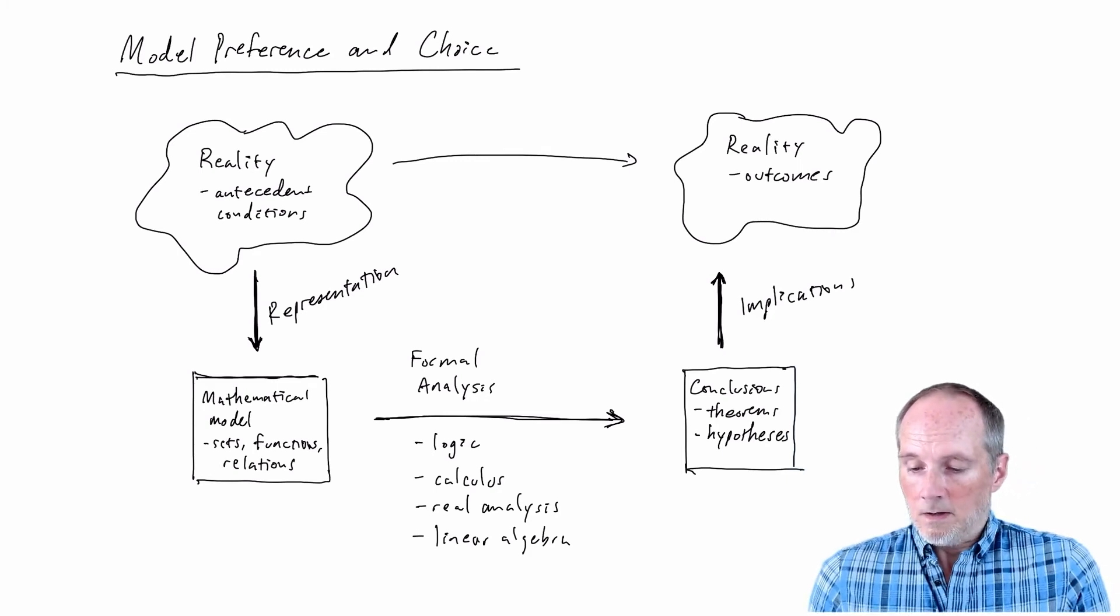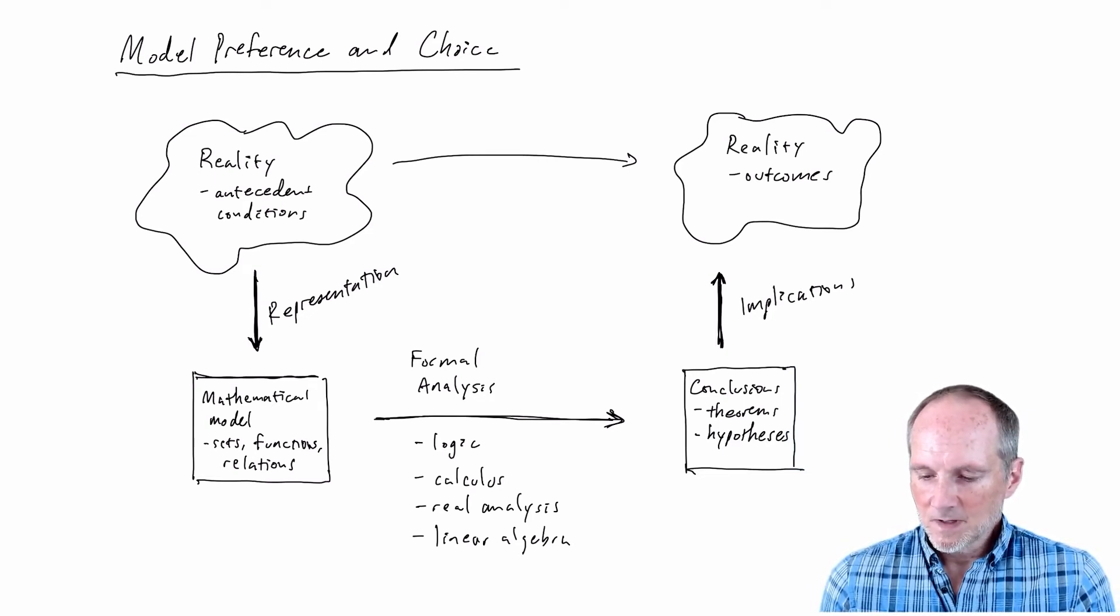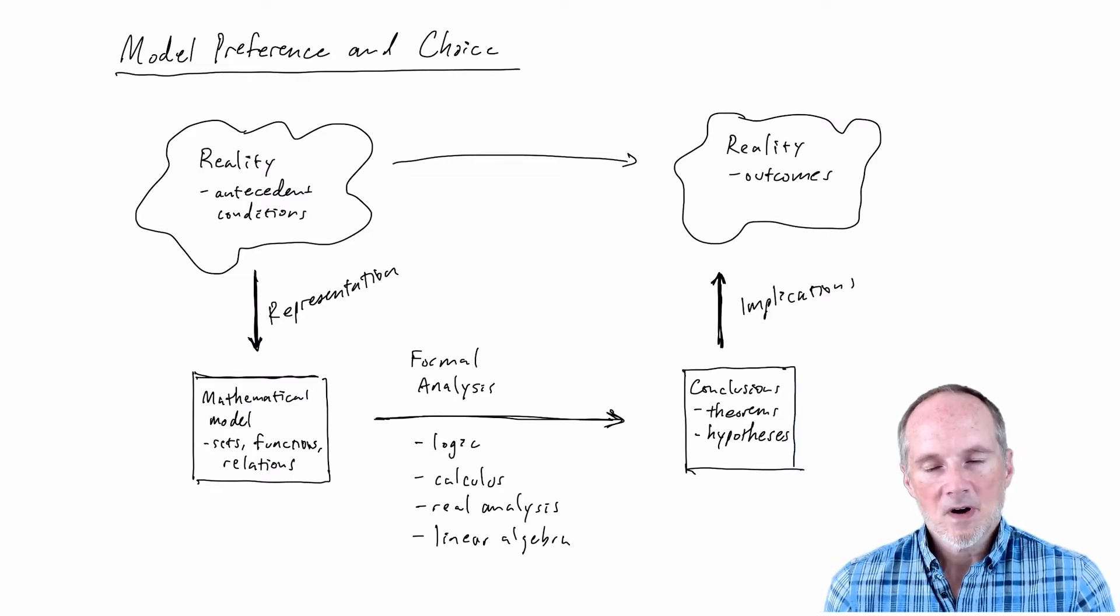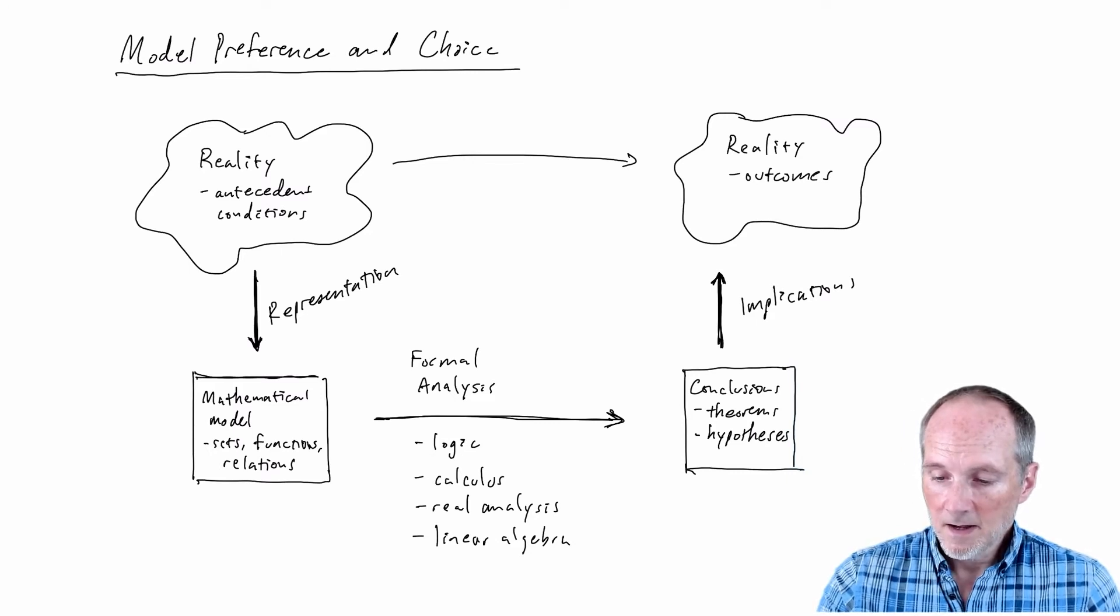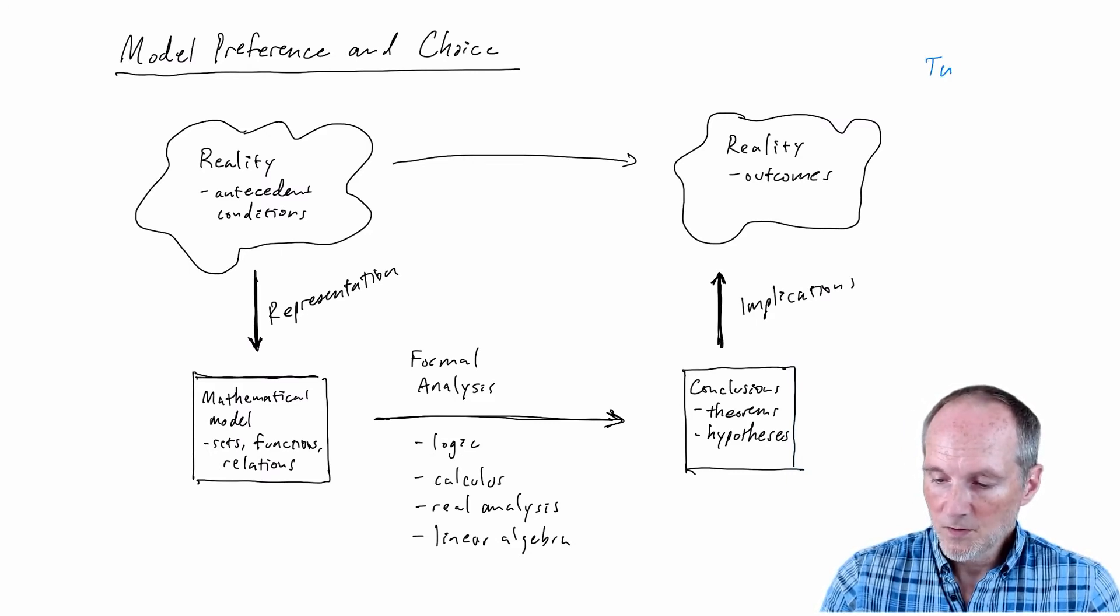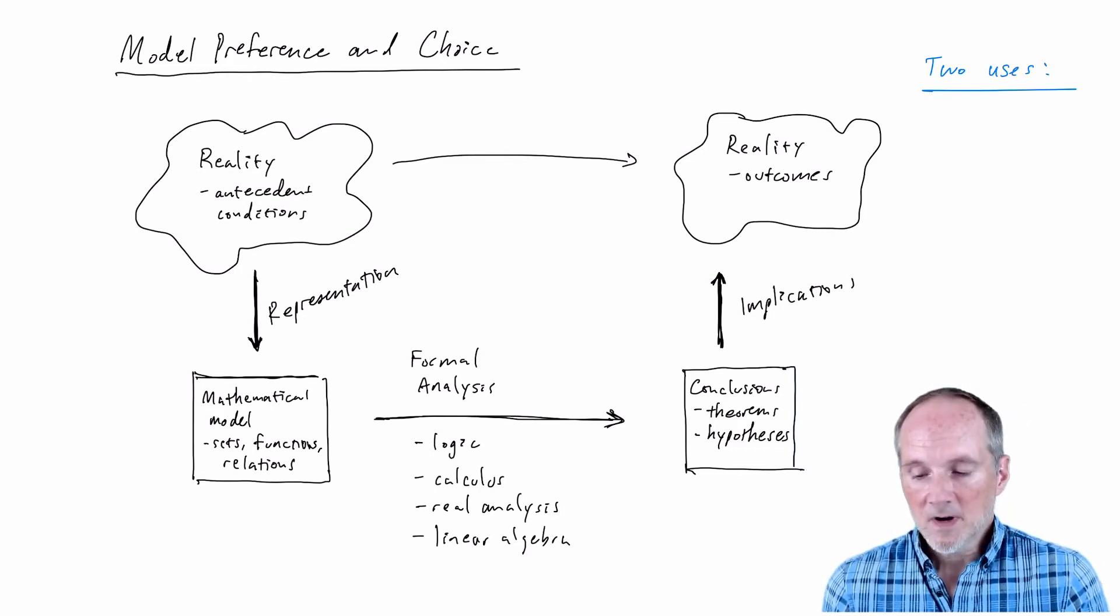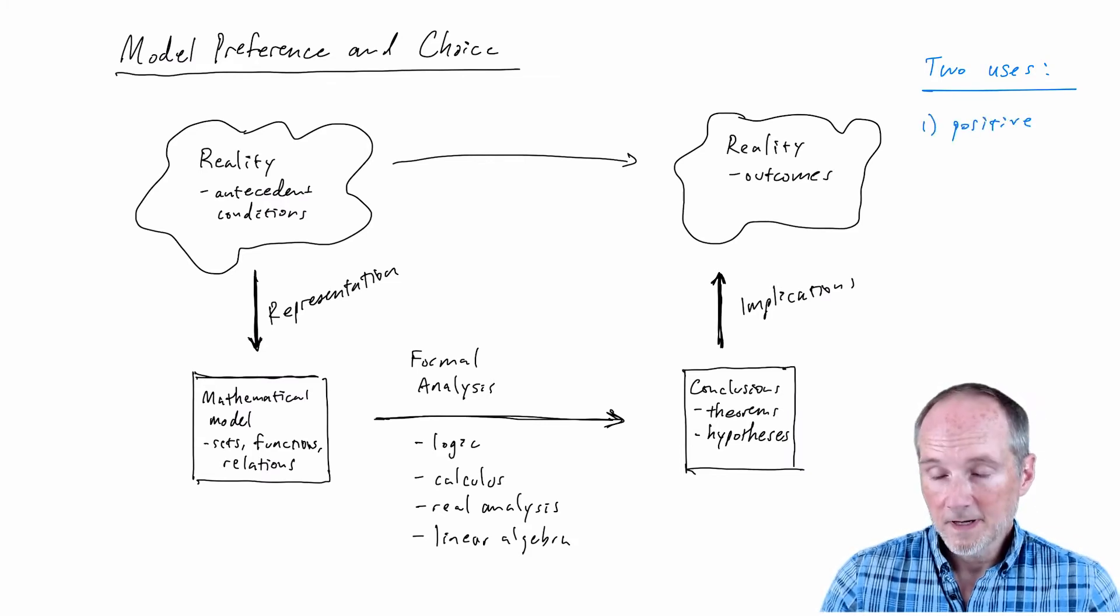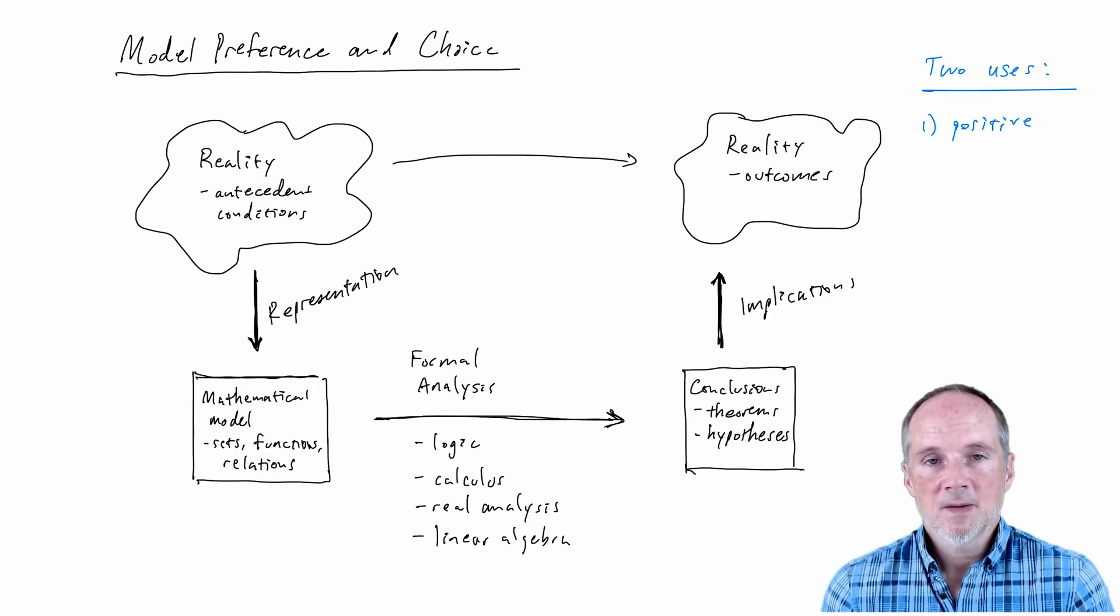So I'm being ambiguous about what those implications are or what that correspondence is and that's because it really kind of depends on how you're using the model and what you're trying to get out of it. There's different ways of using mathematical models. I'll just mention two main uses of mathematical modeling broadly speaking.